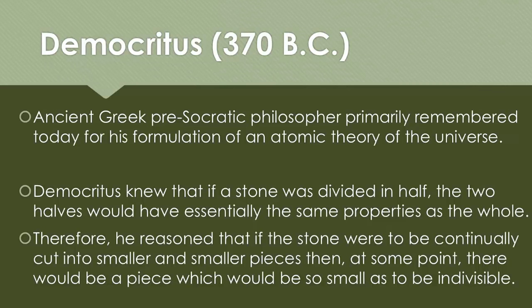Democritus, an ancient Greek pre-Socratic philosopher, primarily remembered today for his formulation of an atomic theory of the universe. Democritus knew that if a stone was divided in half, the two halves would have essentially the same properties as the whole. Therefore, he reasoned that if the stone were to be continually cut into smaller and smaller pieces, then at some point there would be a piece which would be so small that it couldn't be divided anymore.